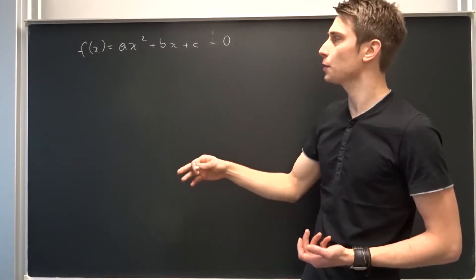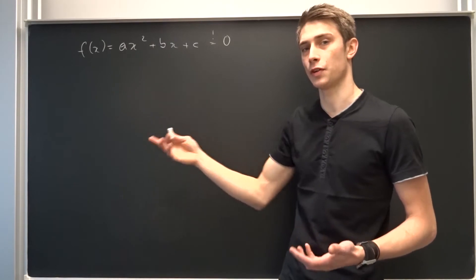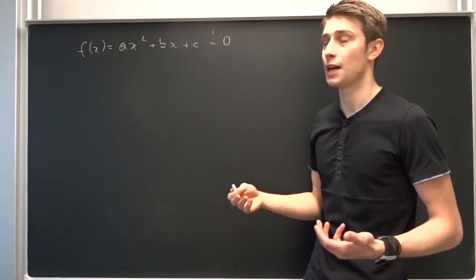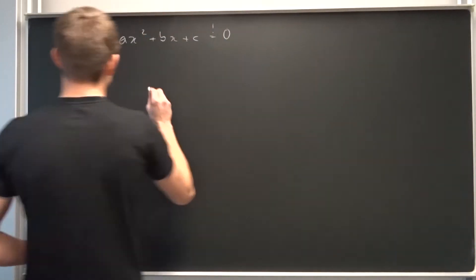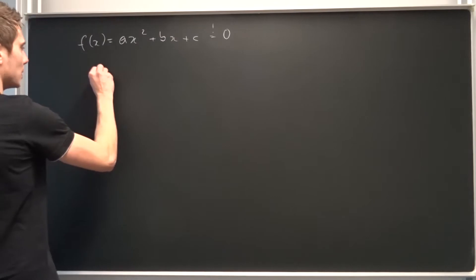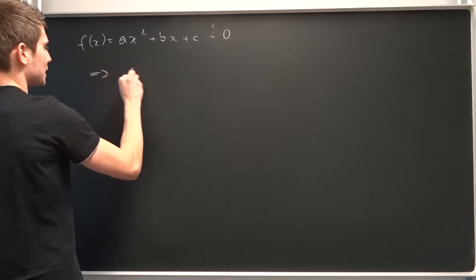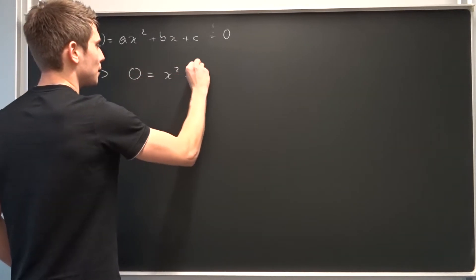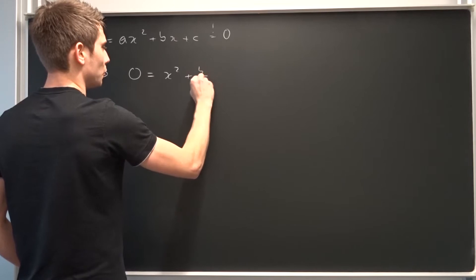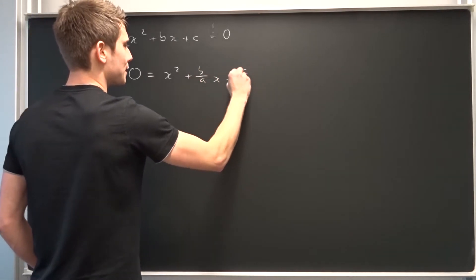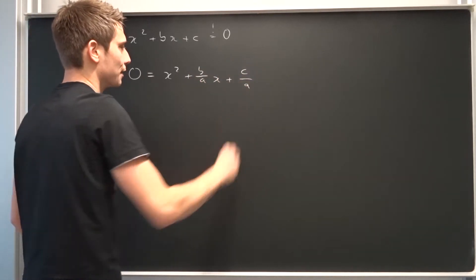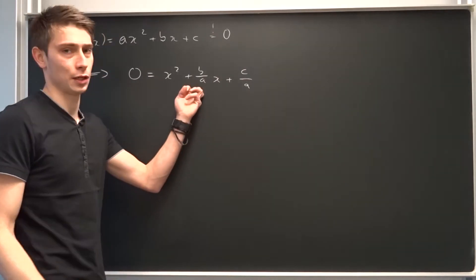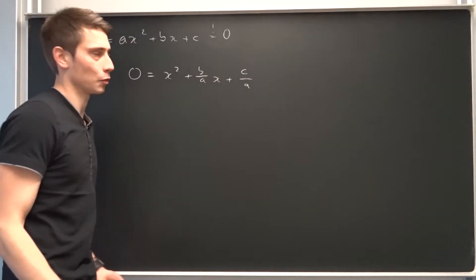We can simplify a bit by dividing everything by a, under the condition that a isn't equal to zero. So what we get now is zero equals x squared plus b over a times x plus c over a. And now we can go on and complete the square of this term right here.